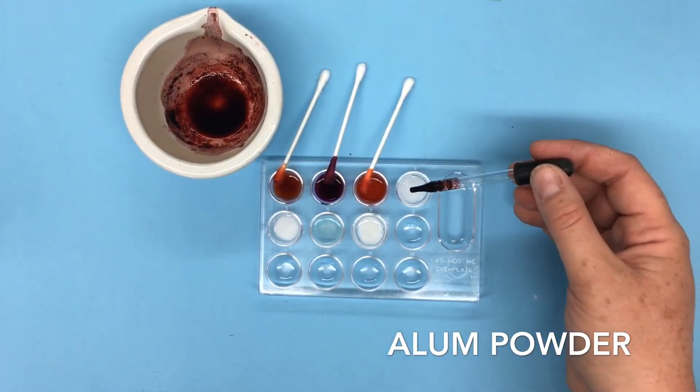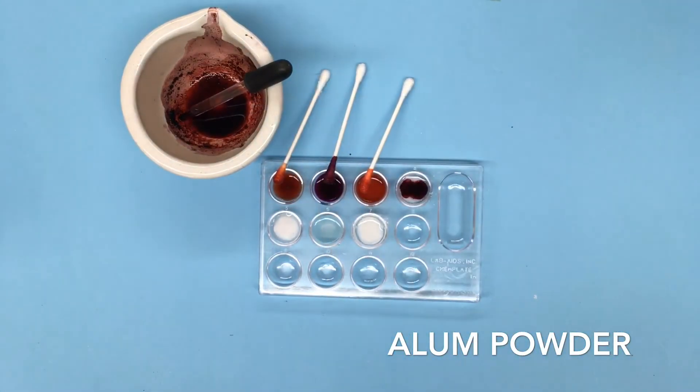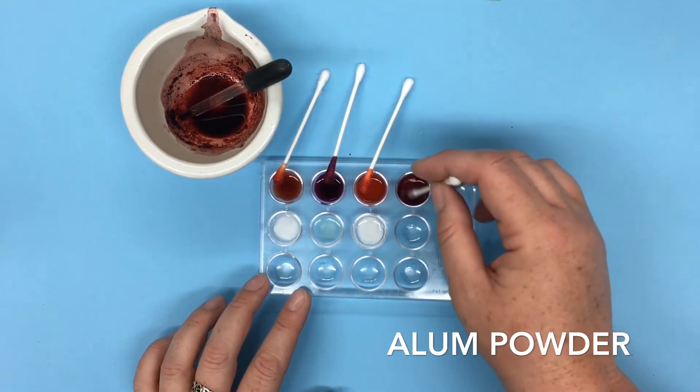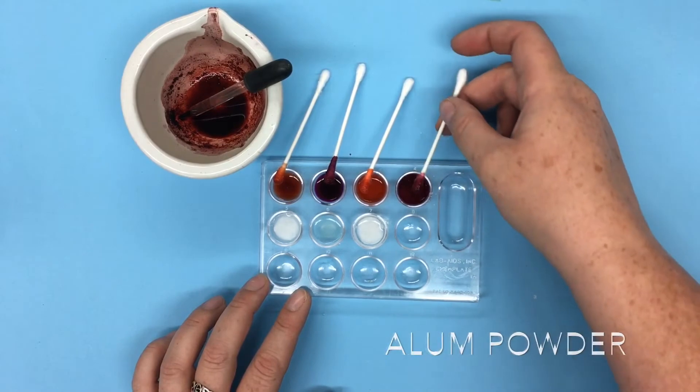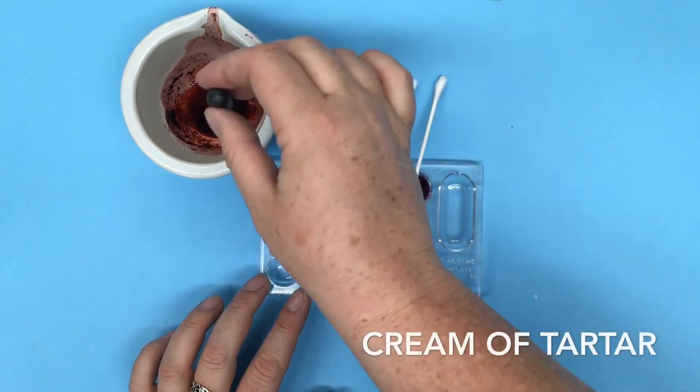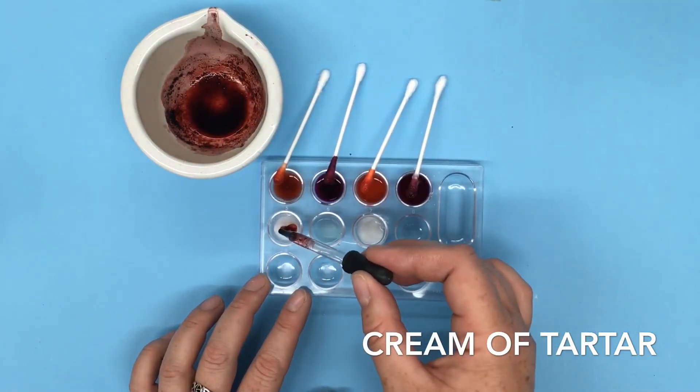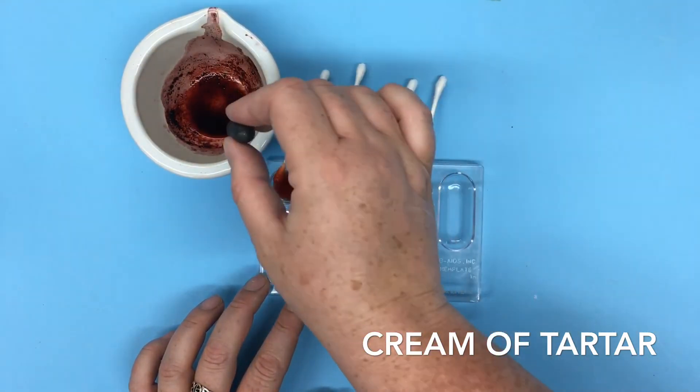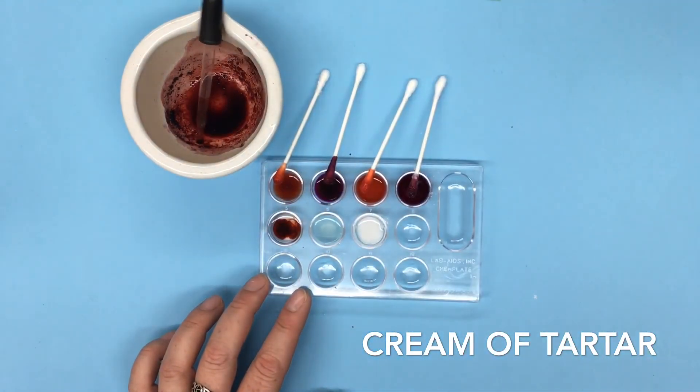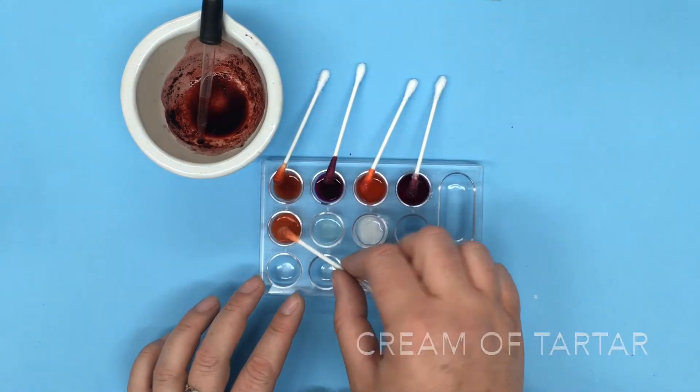Let's just move that one out of the way. Fourth we had our alum powder and the alum also was acidic and that one's giving us more of a red tone instead of the purple of the ammonia. This one was cream of tartar. There we go. Cream of tartar and it's a faint orange.